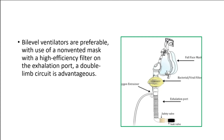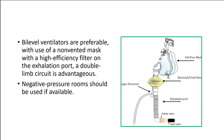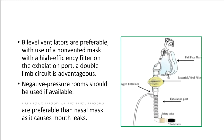Bi-level ventilators are preferable, with use of a non-vented mask with a high-efficiency filter on the exhalation port. A double limb circuit is advantageous. Negative pressure rooms should be used if available. Full face mask or helmet masks are preferable over the nasal mask, as the nasal mask causes mouth leaks.